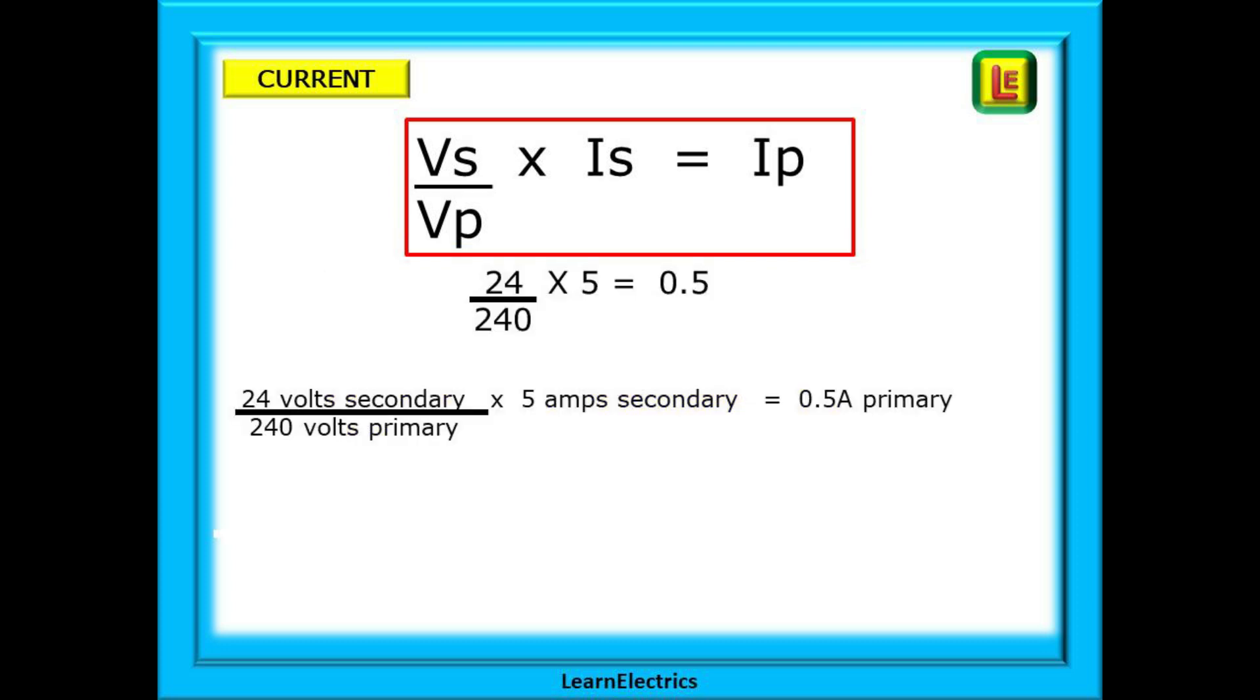Using our previous example again, 24 volts secondary divided by 240 volts primary, and multiply by the secondary current of, let's say, 5 amps, will show us an input current of 0.5 amps. The input voltage is higher than the secondary voltage, but the input current is lower than the secondary current.